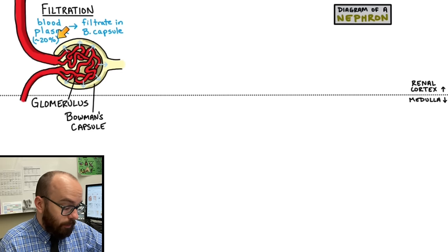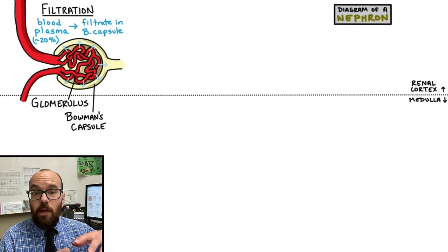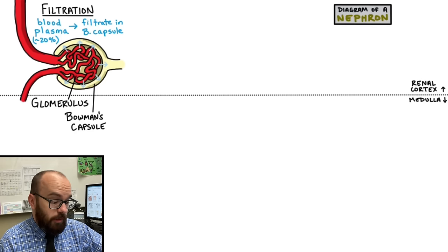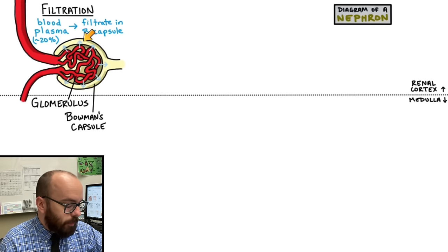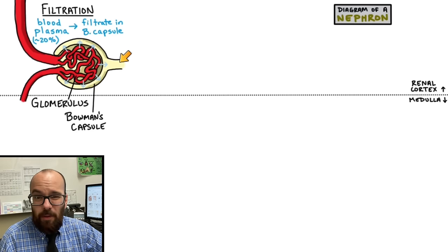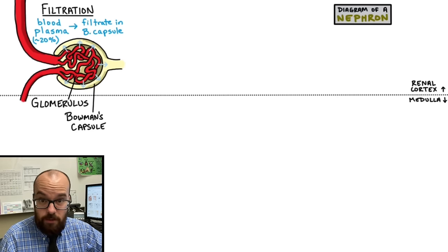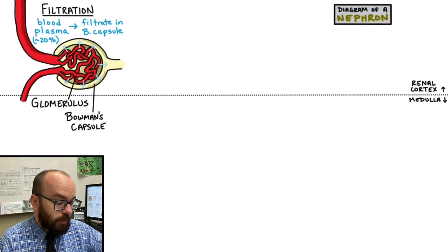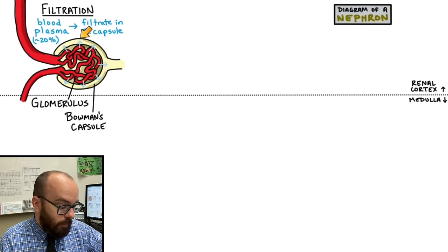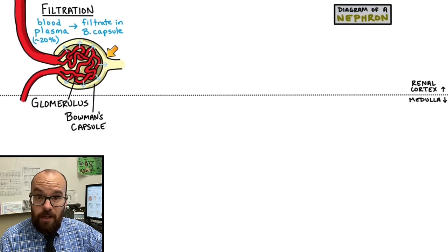Once that blood plasma or fluid is in the Bowman's capsule, we call it the filtrate. As you hear me refer to the filtrate throughout the rest of the video, I'm talking about fluid from the blood that was blood plasma — once it's in the Bowman's capsule and the rest of the nephron, we stop calling it blood plasma and start calling it filtrate. In a period of 24 hours, we filter about 180 liters of blood plasma through the Bowman's capsule to become filtrate.